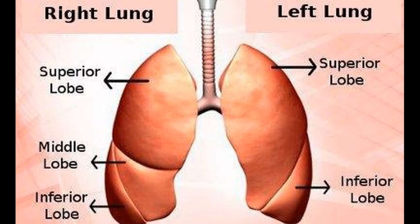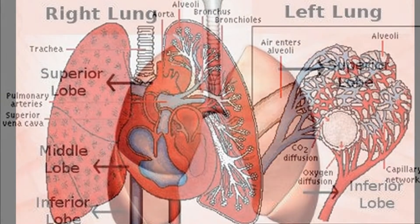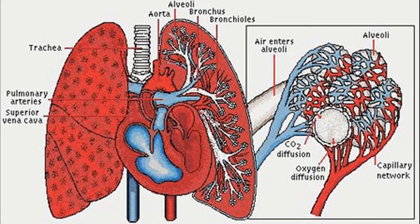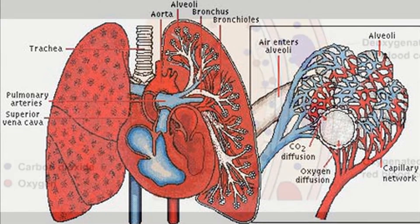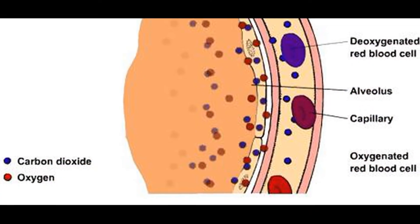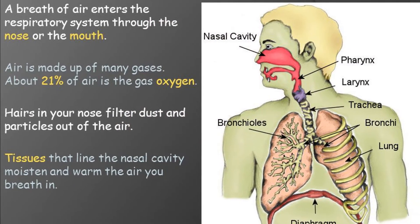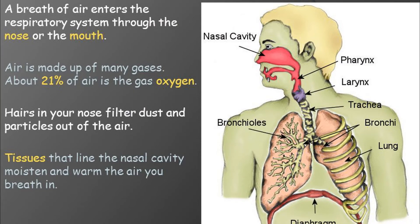The left lung is two-lobed and slightly smaller than the right lung. The right lung has three lobes. Blood rich in carbon dioxide enters the lungs and completely envelops the alveoli. Carbon dioxide passes across the alveoli and is exhaled or breathed out. The oxygen that is inhaled through the nose passes into the blood.